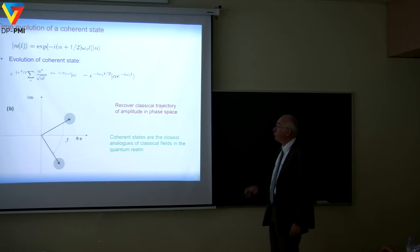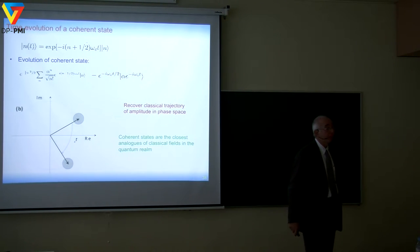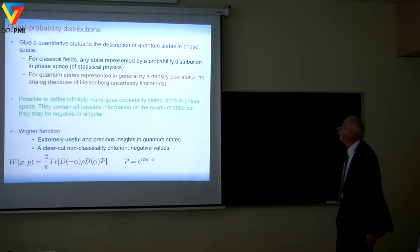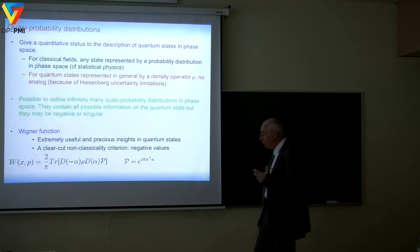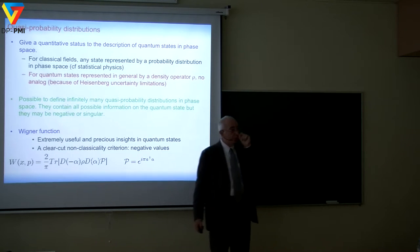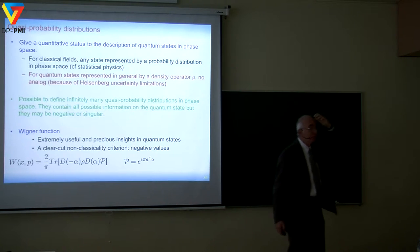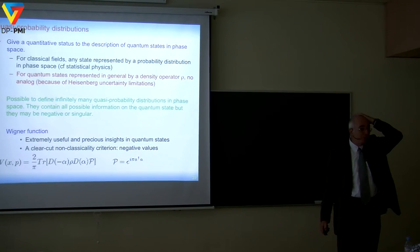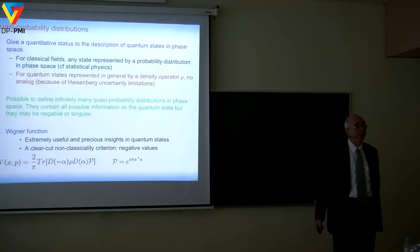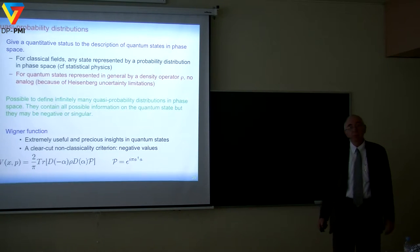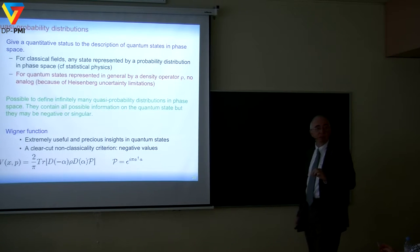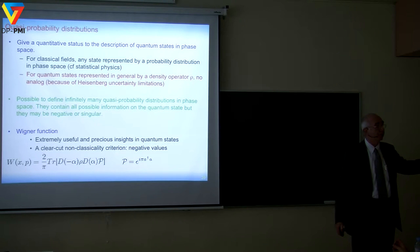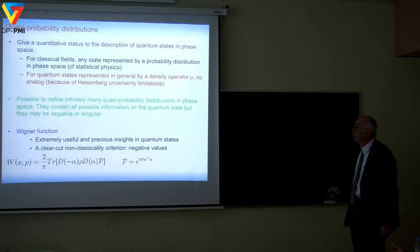How do coherent states evolve? They just rotate in phase space at constant velocity — like a classical oscillator. For a more quantitative description of quantum states of the harmonic oscillator, one can use quasi-probability distributions in phase space, which play the same role as a distribution in phase space of standard statistical physics. The most useful one for us is the Wigner function. From the density matrix, from the Wigner function, you can compute the average of any operator, and you can write the evolution of the system in terms of the Wigner function as a Fokker-Planck equation. It's absolutely an equivalent formulation to standard quantum physics.